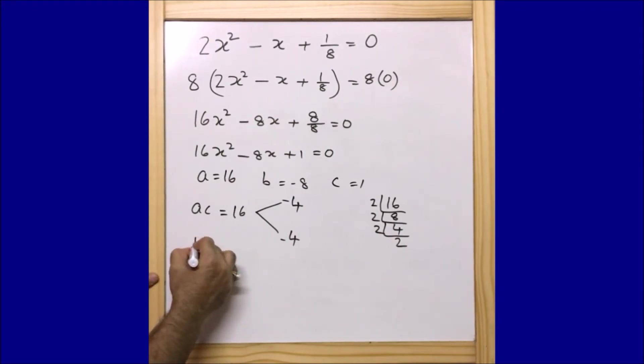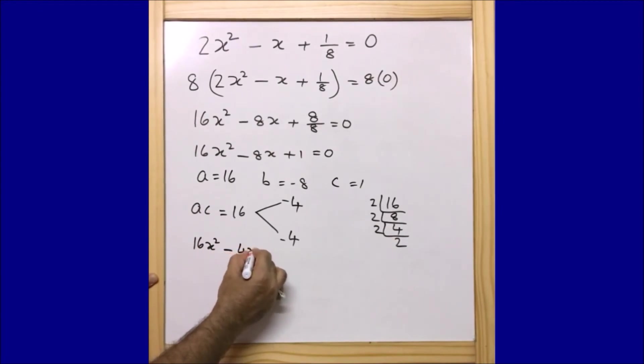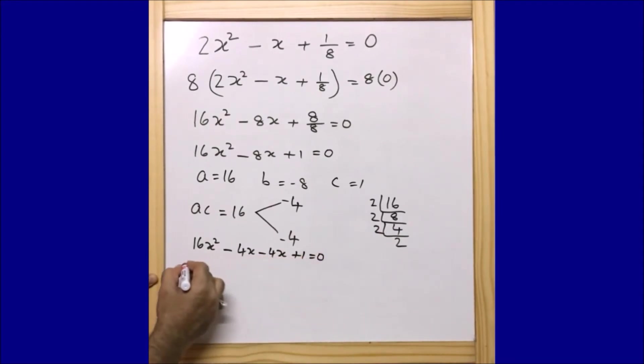Now I can write this equation as 16x^2 - 4x - 4x + 1 = 0. Or again, 4x is common, I can write 4x(4x - 1).